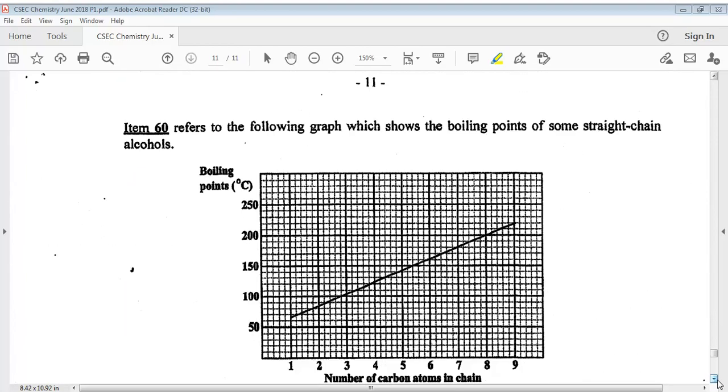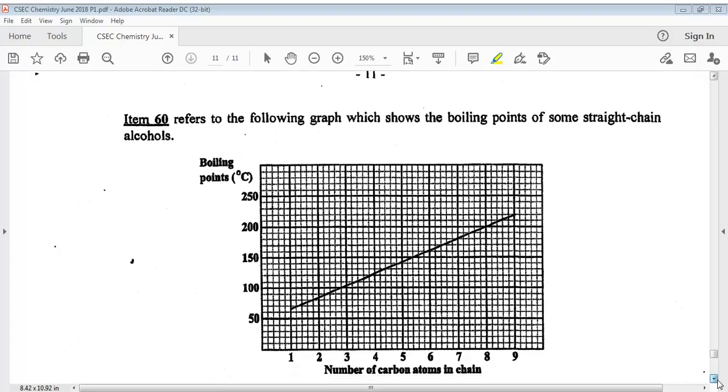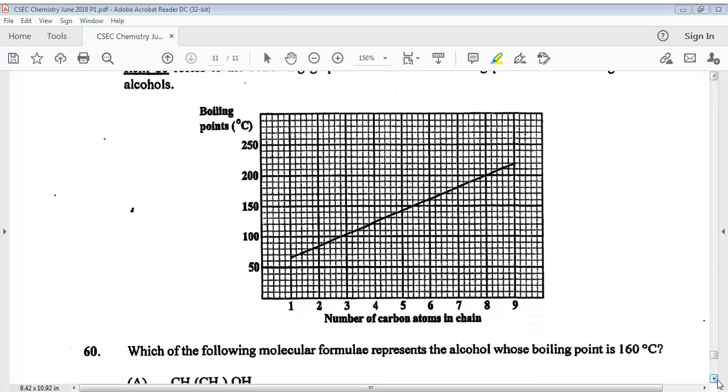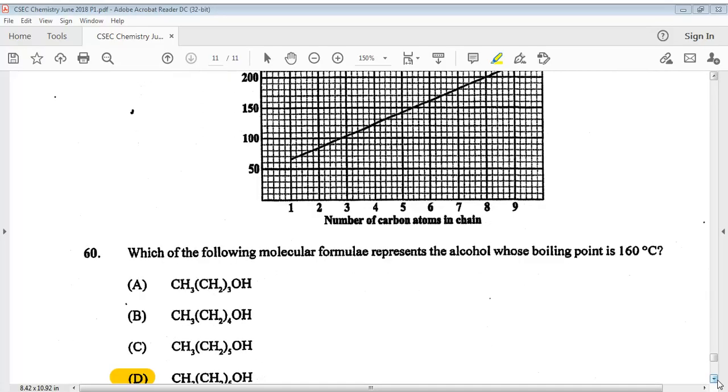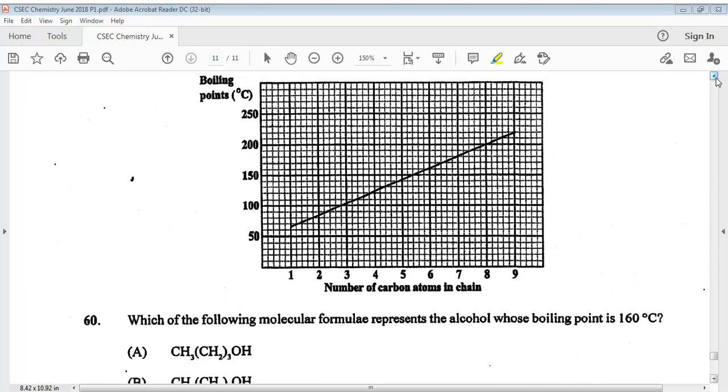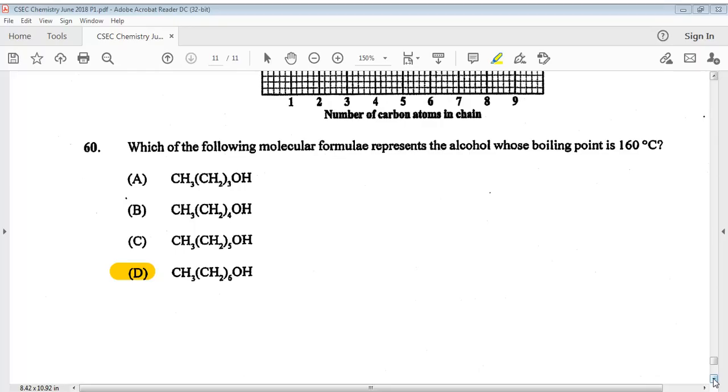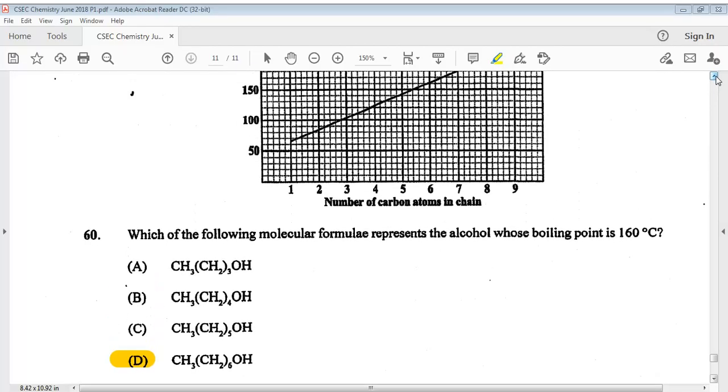Let's go on to the final question. Item sixty refers to the following graph which shows the boiling points of some straight chain alcohols. We have the boiling point and the number of carbon atoms in chains at the bottom. Which of the following molecular formulas represents the alcohol whose boiling point is 160 degrees Celsius? We know it is somewhere up here, 160 degrees Celsius, right there. So the answer is D. We have come to the end of the CSEC Chemistry May June 2018 Paper 1. Don't forget to like, share, and subscribe. Thank you so much for watching.